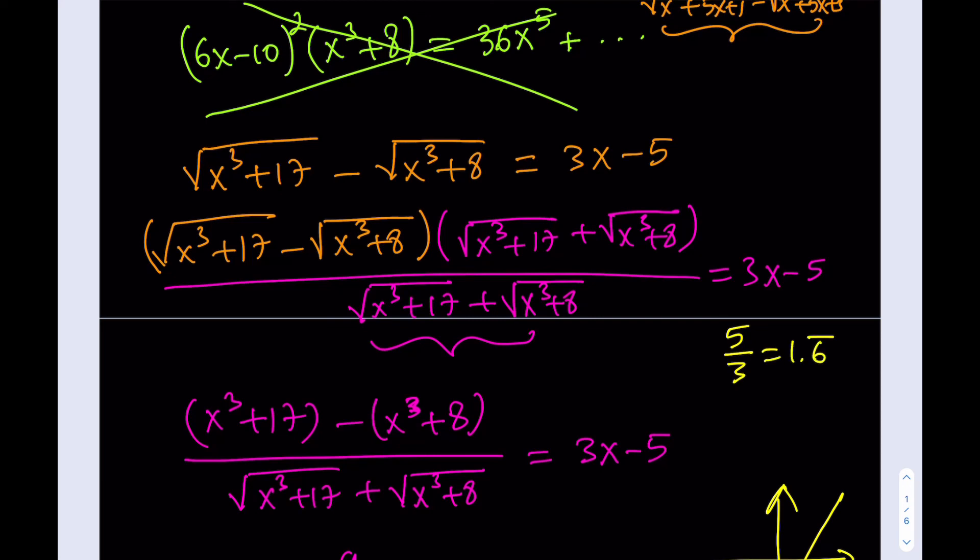Then I should be checking with something greater than that. How about 2? Beautiful. 2 is 8 plus 17 under the radical, and then here it's going to be 8 plus 8 under the radical. And that is the square root of 25, which is 5. The square root of 8 plus 8 is 4. And the answer is 1. If I plug in 2 here, I get 1. Bam. I got it. So the answer is 2.